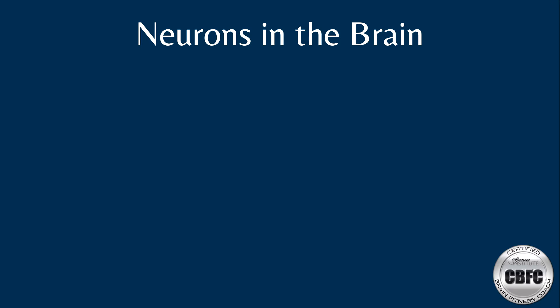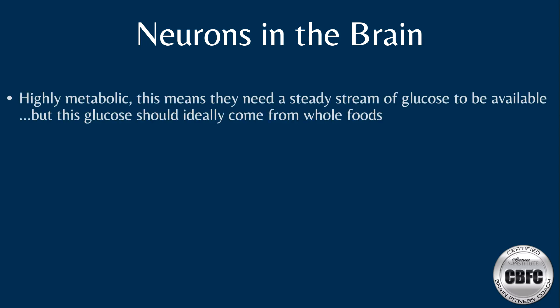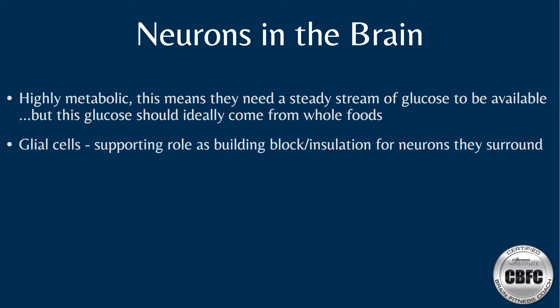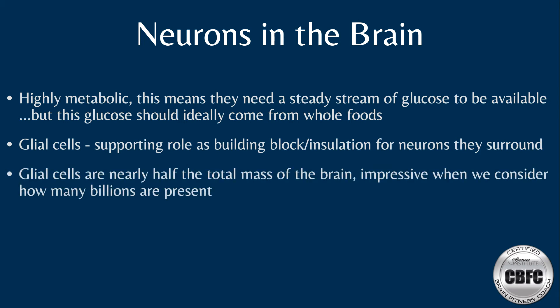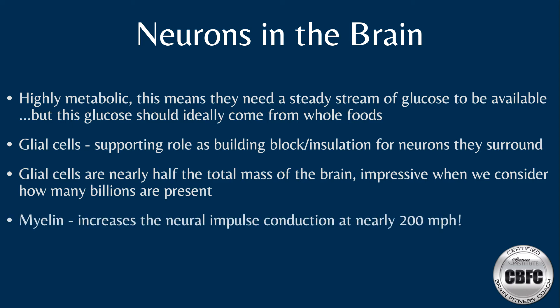Neurons are highly metabolic and require a steady stream of glucose, ideally from whole foods like vegetables and fruit. Glial cells are support cells that provide insulation and structural support for the neurons they surround. Glial cells comprise nearly half of the total mass of the brain. While the human brain has 85 to 100 billion neurons, it has 10 to 50 times that number in glial cells.